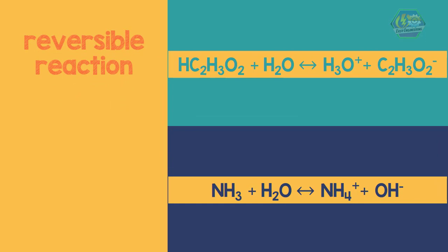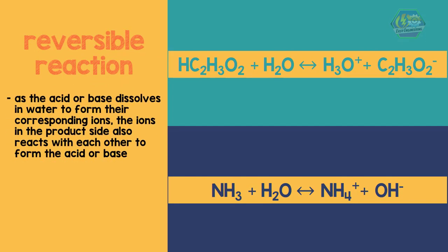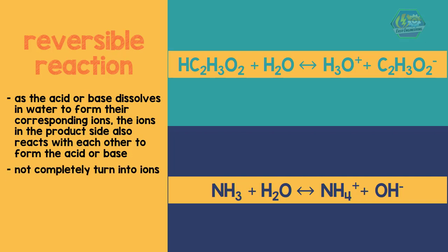A reversible reaction means that as the acid or base dissolves in water to form their corresponding ions, the ions on the product side also react with each other to re-form the acid or base. Hence, when a weak acid or weak base dissolves in water, it will not completely turn into ions, and the reaction can proceed either to the left or to the right.